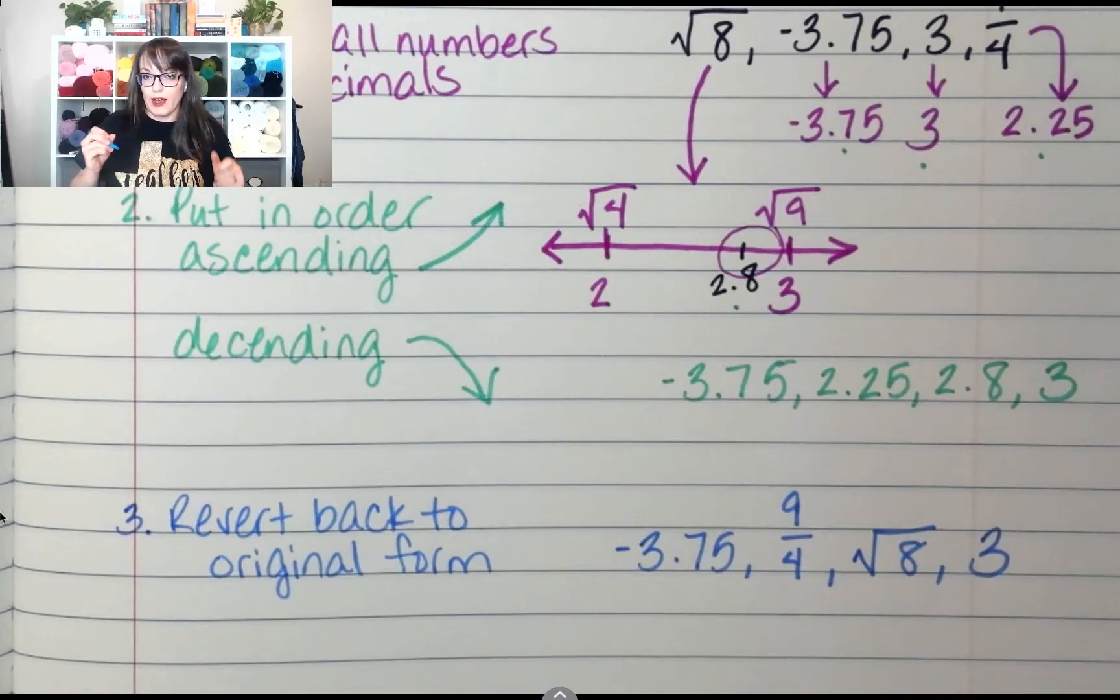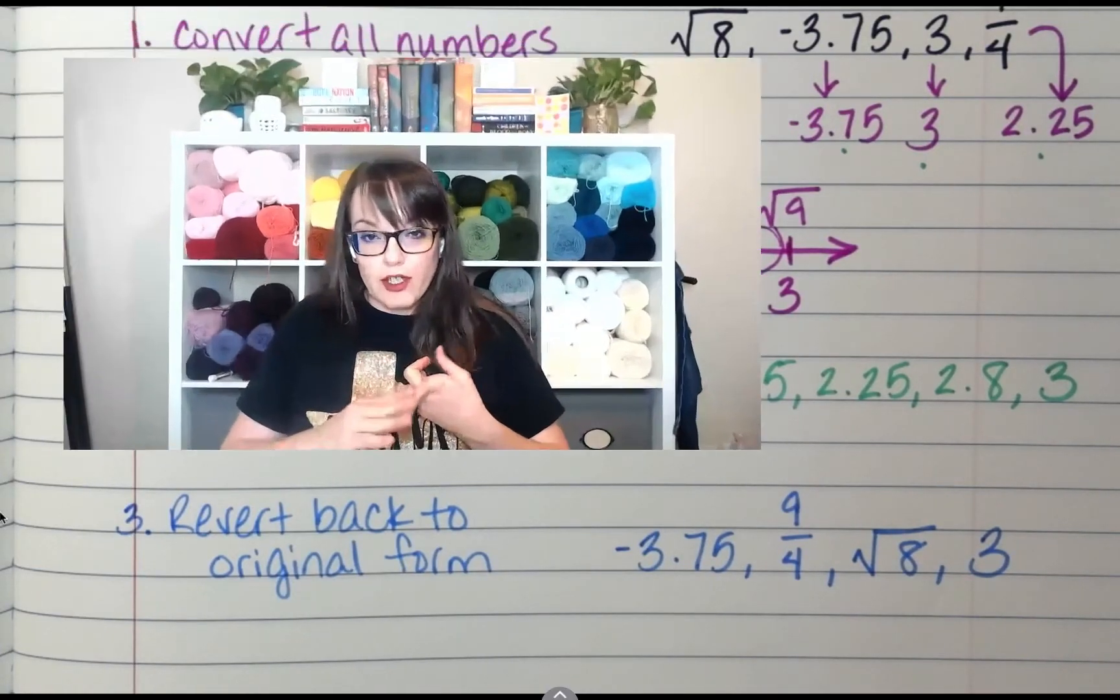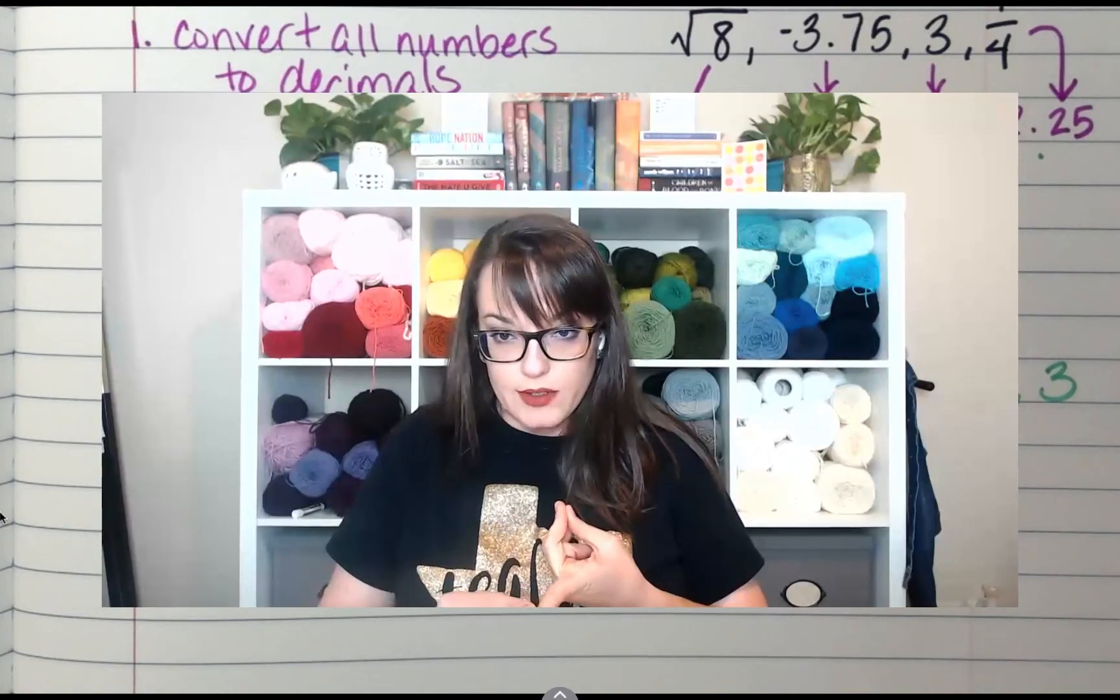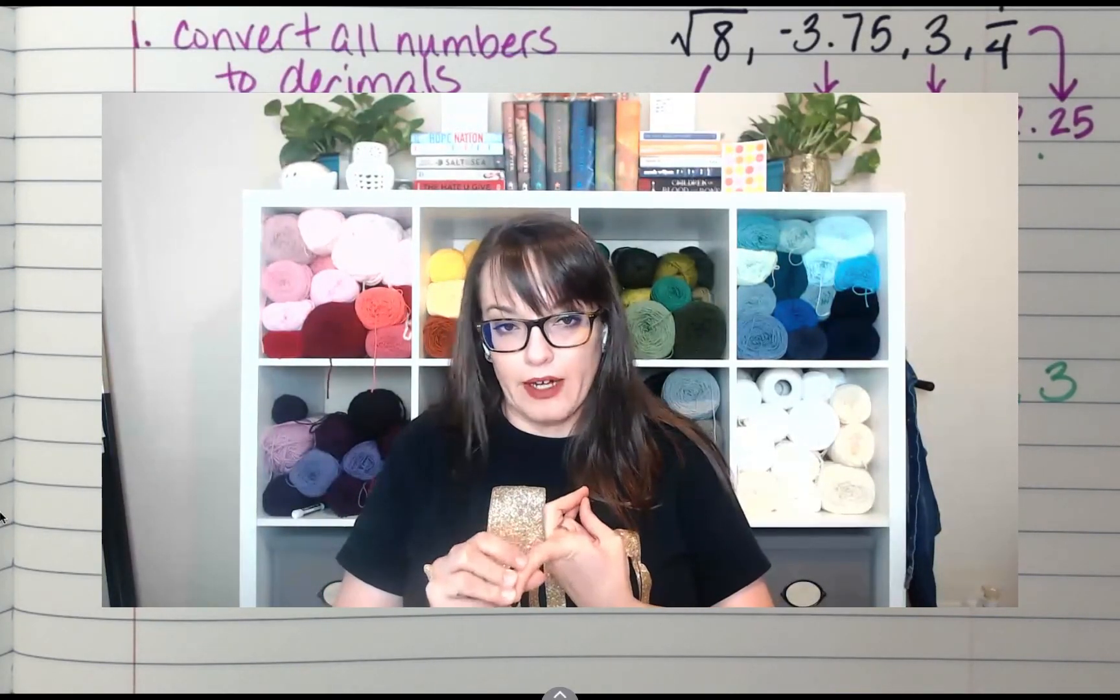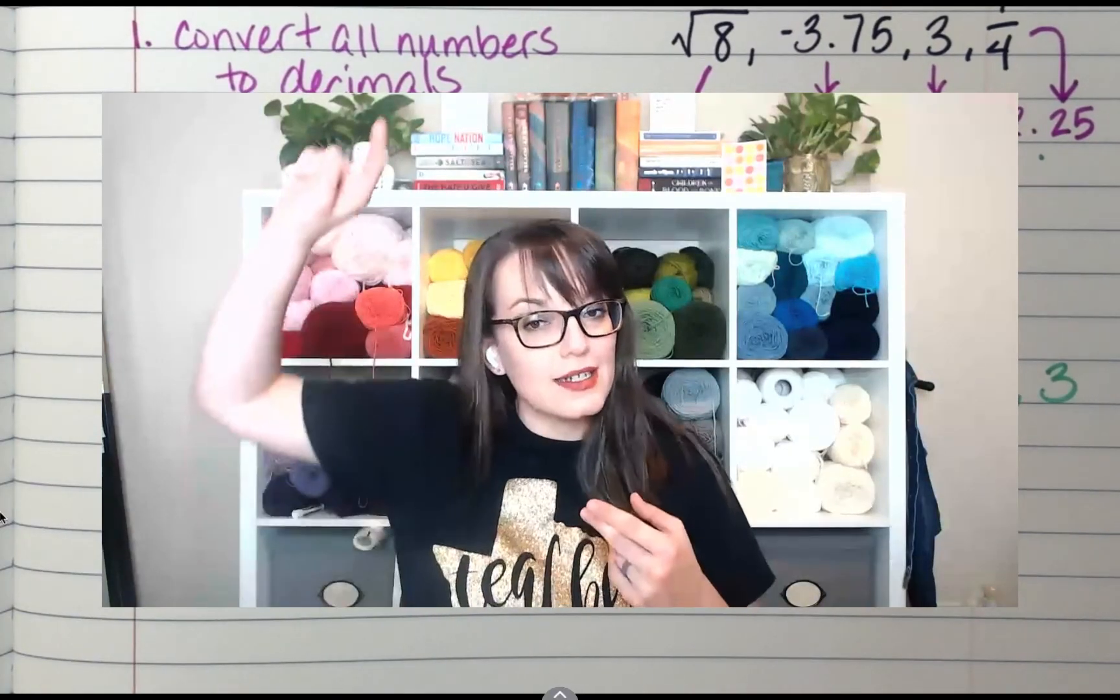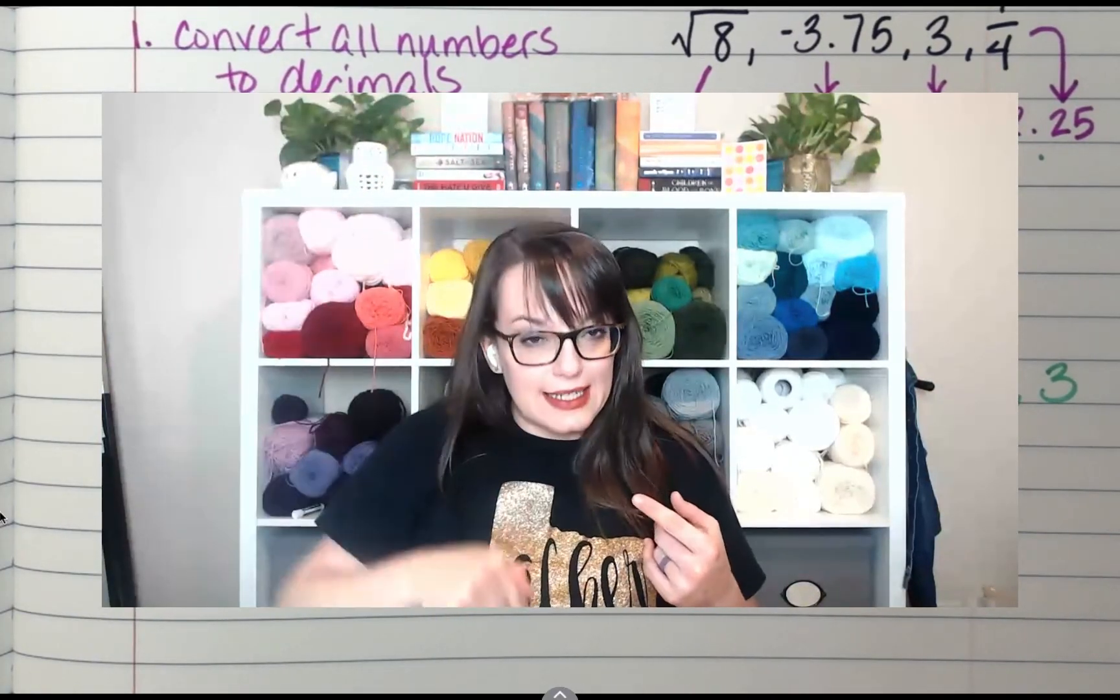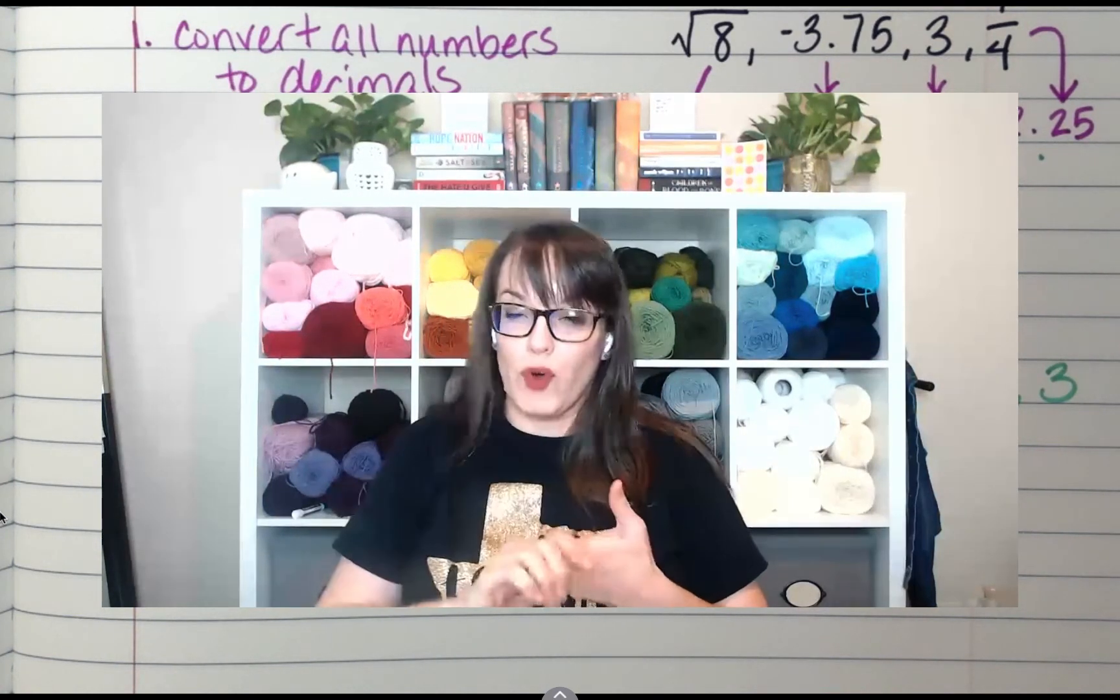So anytime they give you numbers, you want to convert all of them to decimals. Be careful with converting to decimals—make sure you're doing it right. Then pay attention to if it's asking for ascending or descending, put them in order, and put them back in their original form.